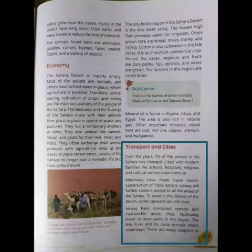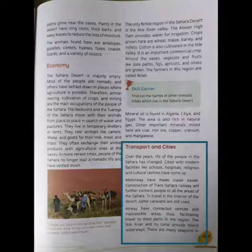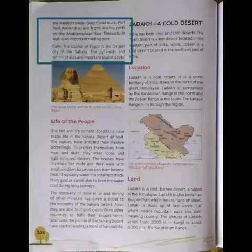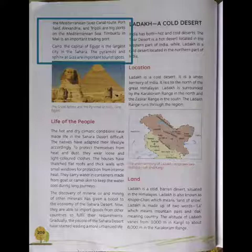Transport in Western Sahara is very limited — by sea, roads and air — with camel being the primary means of transport in desert areas. Motorways make travel easier. Construction of the Trans-Saharan Railway will further connect all the peoples of the Sahara. Airways have connected remote and inaccessible areas, facilitating travel to most parts of the region. The Nile River and its canals provide inland waterways. Port Said, Alexandria and Tripoli are the biggest ports on the Mediterranean Sea.